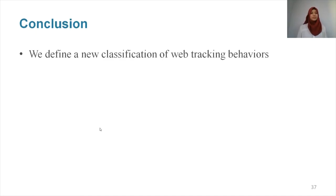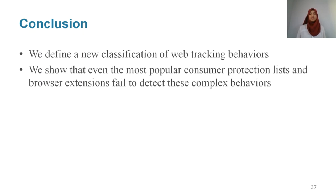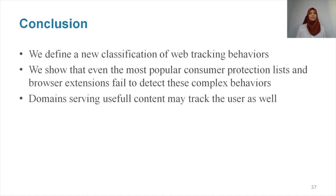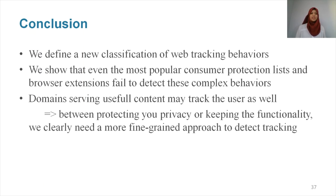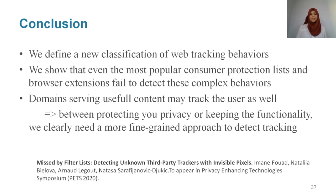To conclude, we analyzed the invisible pixels that are widely present on the web and are perfect suspects for tracking, to define a new classification of web tracking behaviors. We then applied this classification to all kinds of content and compared it to browser extensions and filter lists. We showed that even the most popular consumer protection lists such as EasyList, EasyPrivacy, or Disconnect, and the browser extensions, failed to detect these complex behaviors. We also showed that domains serving useful content may track the user as well, which leads to the conclusion that, between protecting our privacy and keeping the functionality of websites, we clearly need a more fine-grained approach to detect tracking. For any further details, please refer to our paper, 'Missed by Filter Lists: Detecting Unknown Third-Party Trackers with Invisible Pixels.' Thank you for your attention.